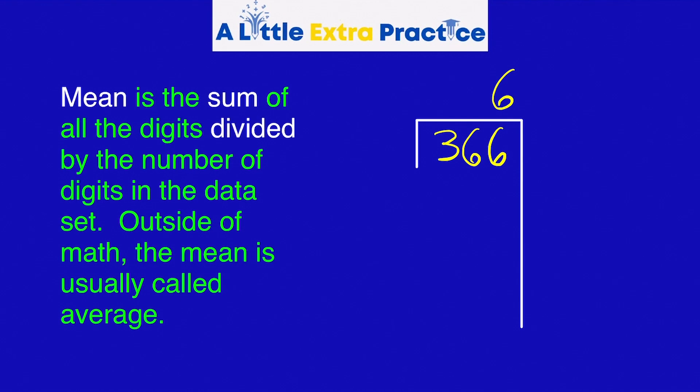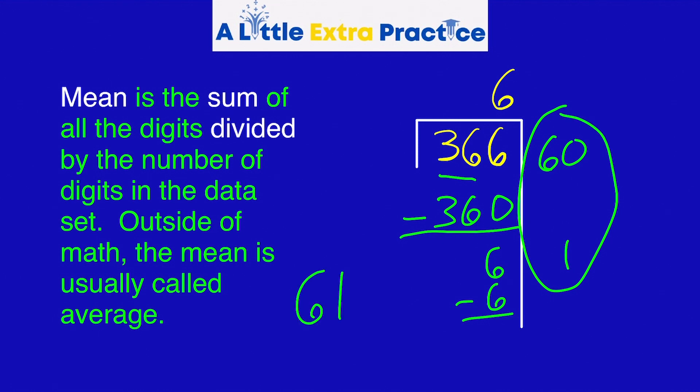So I'm going to divide 366 divided by six using the partial product method. What times six is almost 360? Well, 60 is. Six times six is 36. Add the zero. Subtract. Six minus zero is six. Six times one is six. And we have a quotient of 61. In our case, the mean or average is 61.